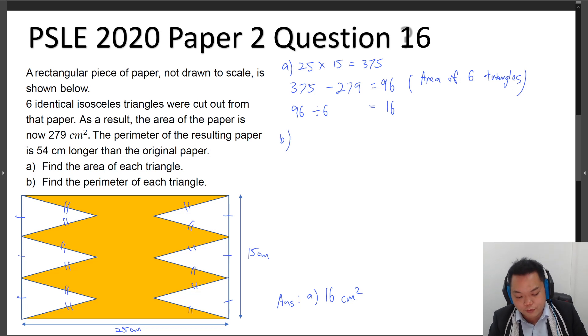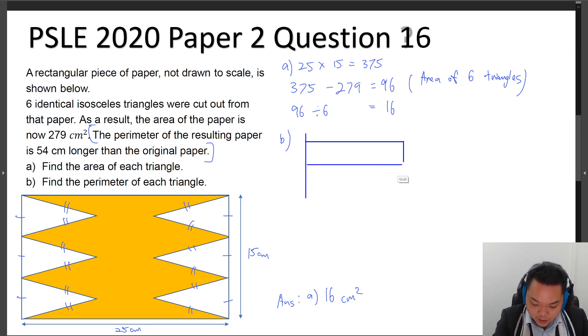Then for part B, find the perimeter of each triangle. And this is where most kids would have been stumped. So let's just define what we have first. We are comparing the two perimeters: perimeter of a rectangle, perimeter of the new figure. So let's just see how it goes. The perimeter of the rectangle can be represented as follows. There are two lengths and two breaths over here. So let's just label this down for us: 25, 25, 15, 15. Rectangle's perimeter can be represented.